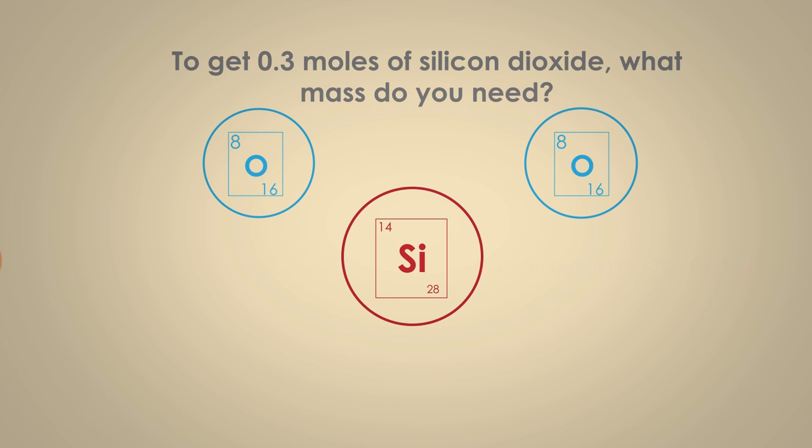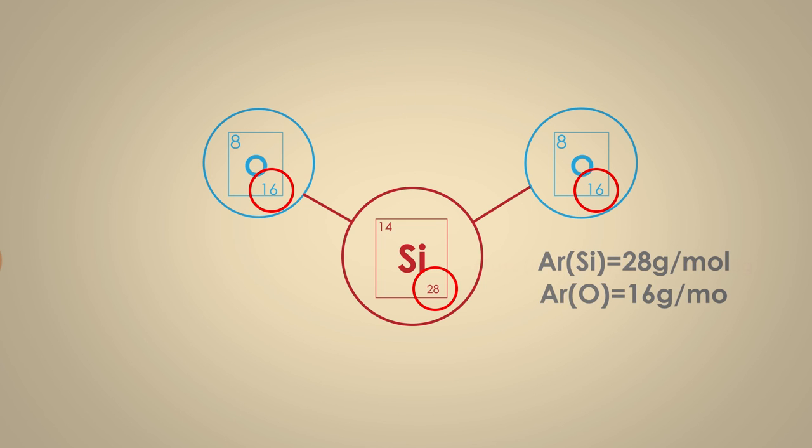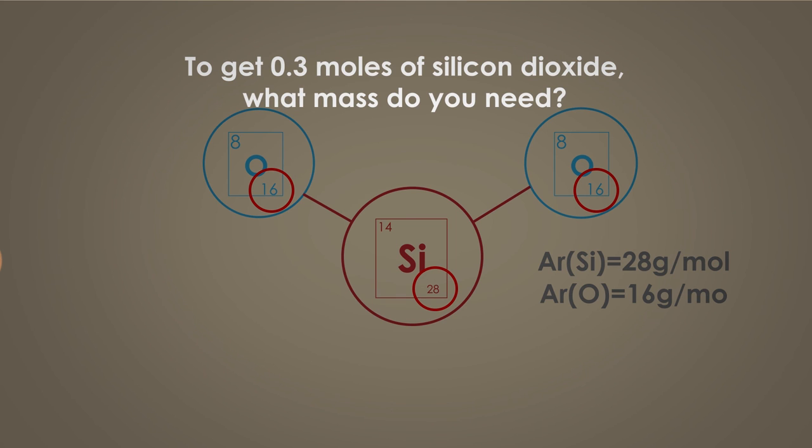Let's say you need 0.3 moles of silicon dioxide. The relative atomic masses of silicon and oxygen are 28 and 16 grams per mole. What mass do you need? Pause the video whilst you do your calculation.